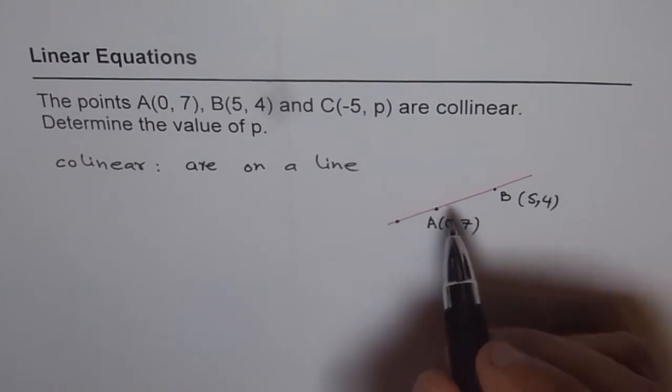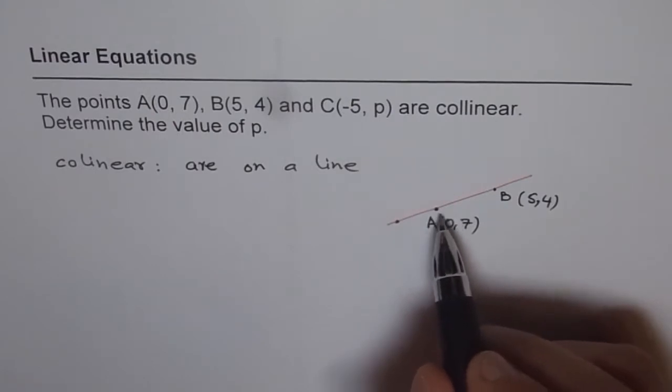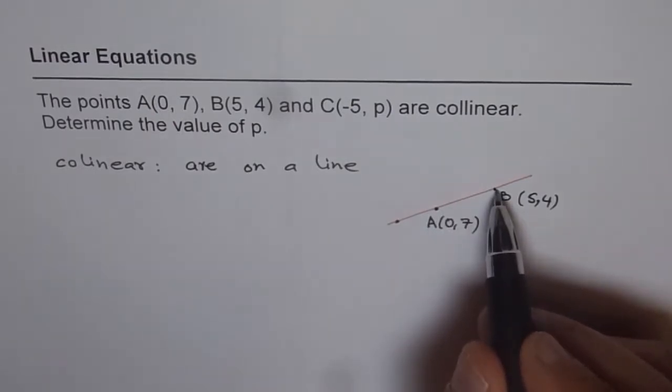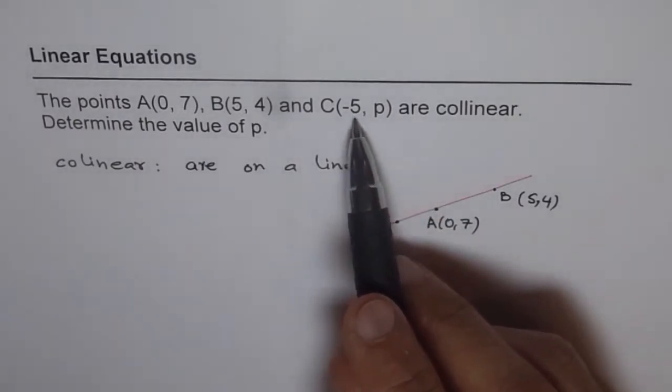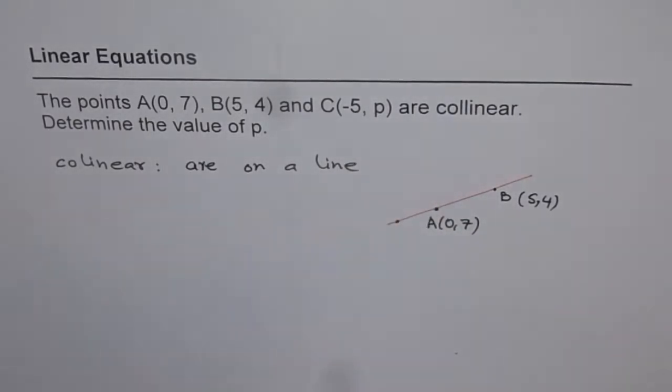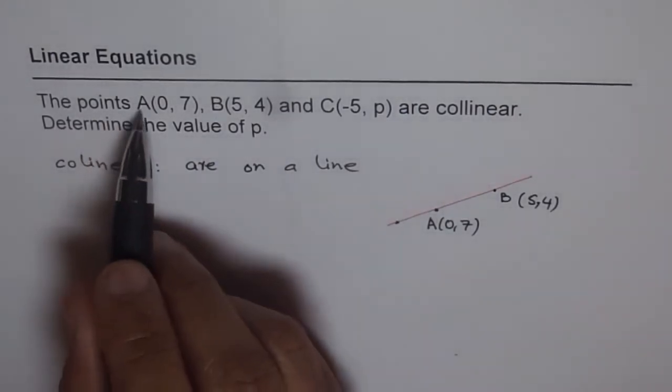The best way is to find the equation of a line going through any two points. So, A and B are given points. We will find the equation between line A and B. And in this equation, we will put the value of x as -5 and find the y value. So, that is how we are going to solve it. That is the strategy.